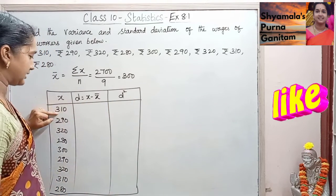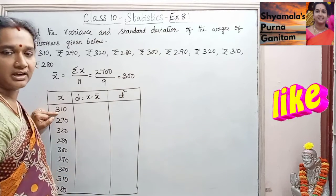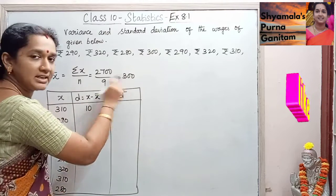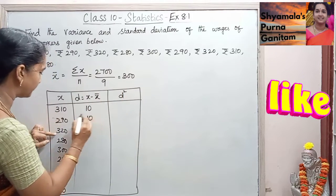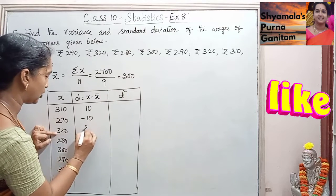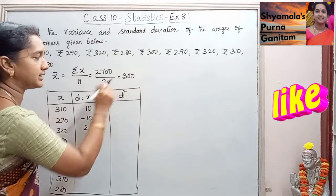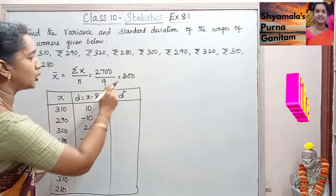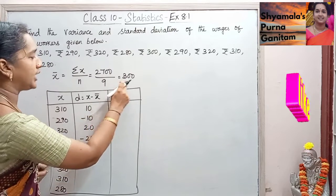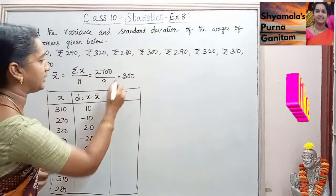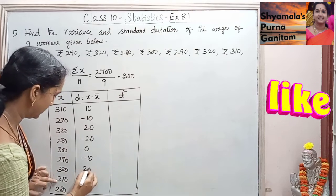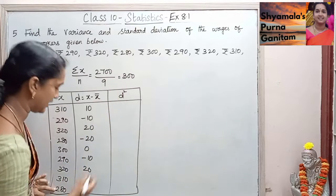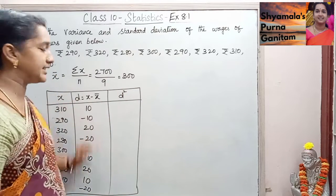Computing x minus x̄: x is 310 and x̄ is 300, so 310 minus 300 is 10. Next, 290 minus 300 is minus 10. Then 320 minus 300 is 20. These are the d values.